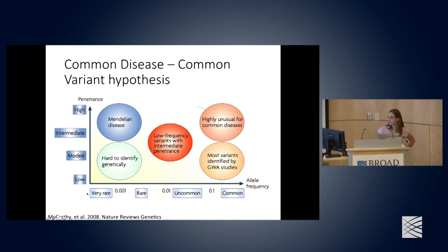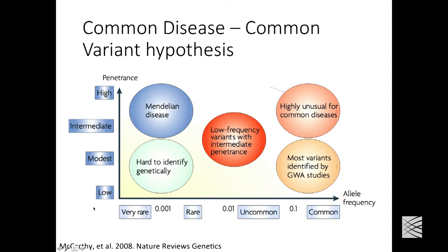In this plot, the x-axis shows the frequency of a variant and the y-axis shows the penetrance or effect size. Variants affecting Mendelian diseases are often very rare and have large effects. GWAS targets variants on the right side — more common variants with lower effect sizes. As GWAS have progressed, we've been able to detect effects at lower and lower minor allele frequencies.